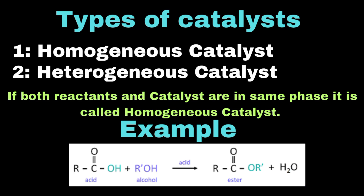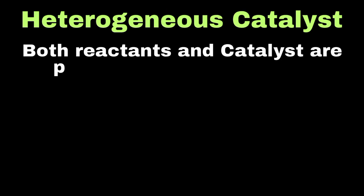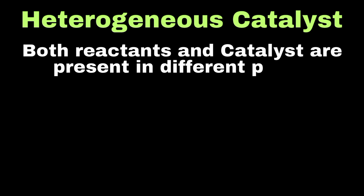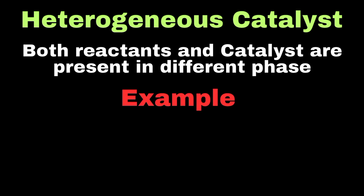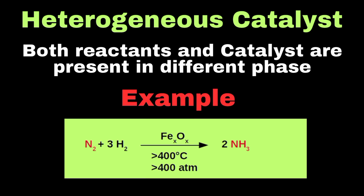In heterogeneous catalysis, the reactants and the catalyst are present in different phases. A common example is iron in the Haber process, where iron acts as a solid catalyst to speed up the formation of ammonia from nitrogen and hydrogen, while remaining in a different phase from the gaseous reactants.